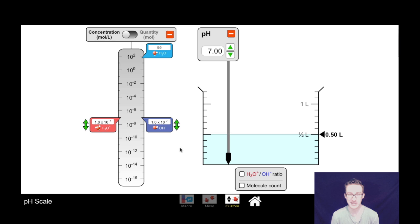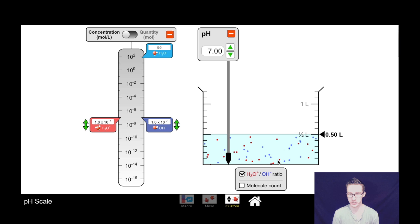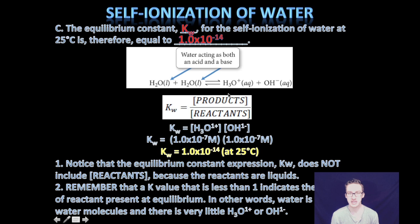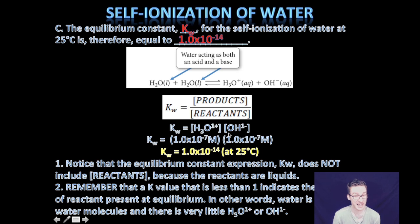When you look at your beaker of water, you may think not a whole lot is going on. But I'm going to click this button and recognize that your sample of water actually will have small but equal concentrations of hydronium and hydroxide ions in pure water. As we apply this equilibrium reaction to the idea of an equilibrium constant, which relates the ratio of the products to the reactants, we end up with an expression for the equilibrium constant of water: Kw equals hydronium ions times hydroxide ions. Because each of those concentrations are 1×10⁻⁷ each at 25°C, Kw at 25°C equals 1×10⁻¹⁴.